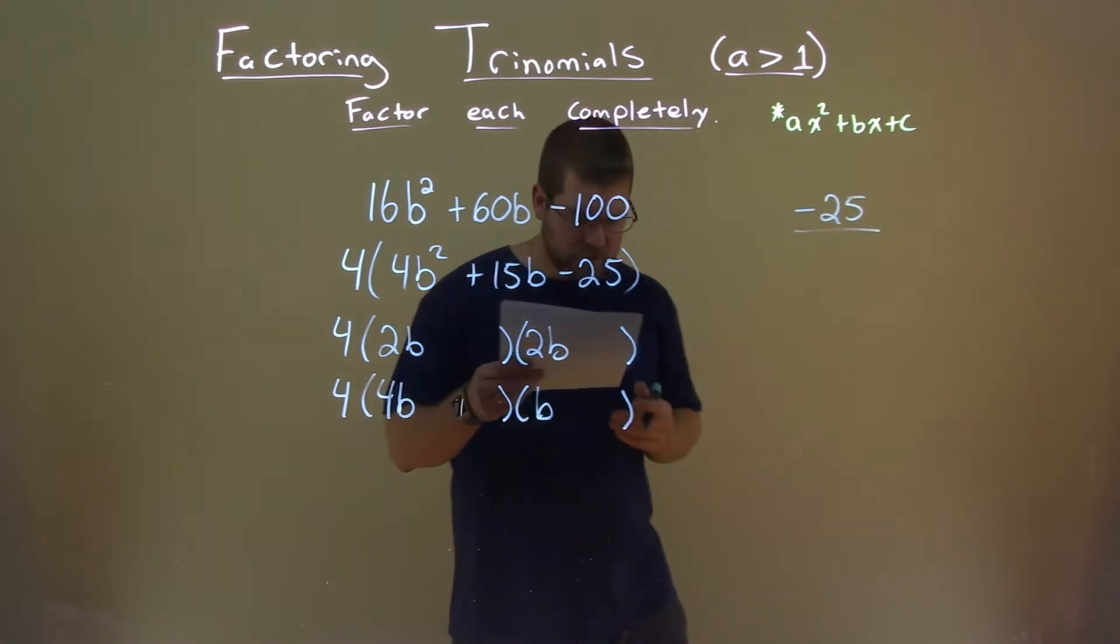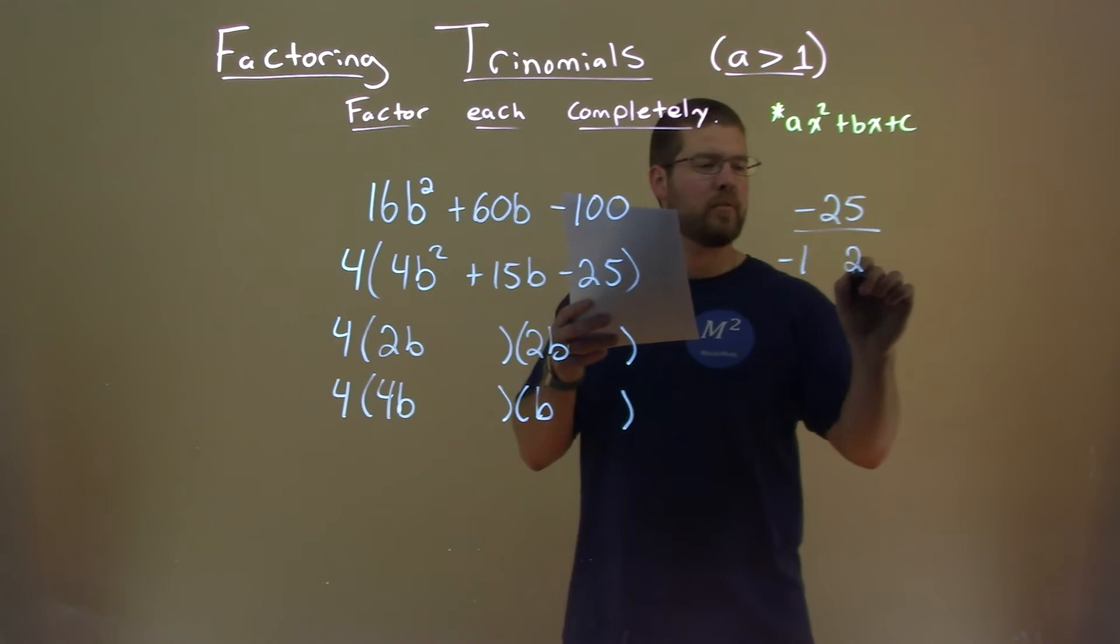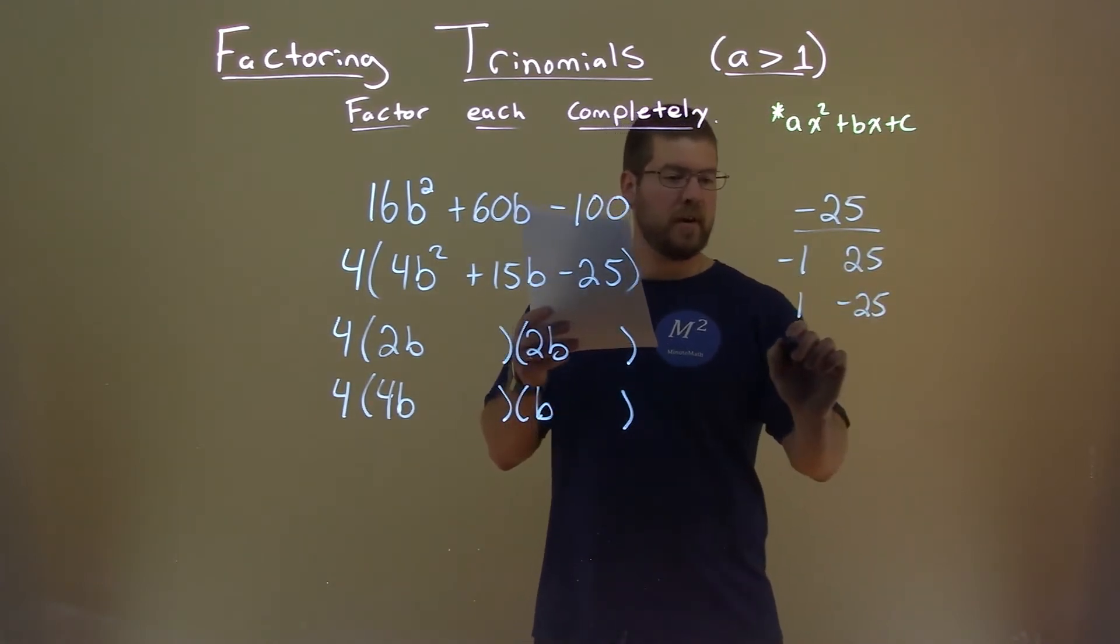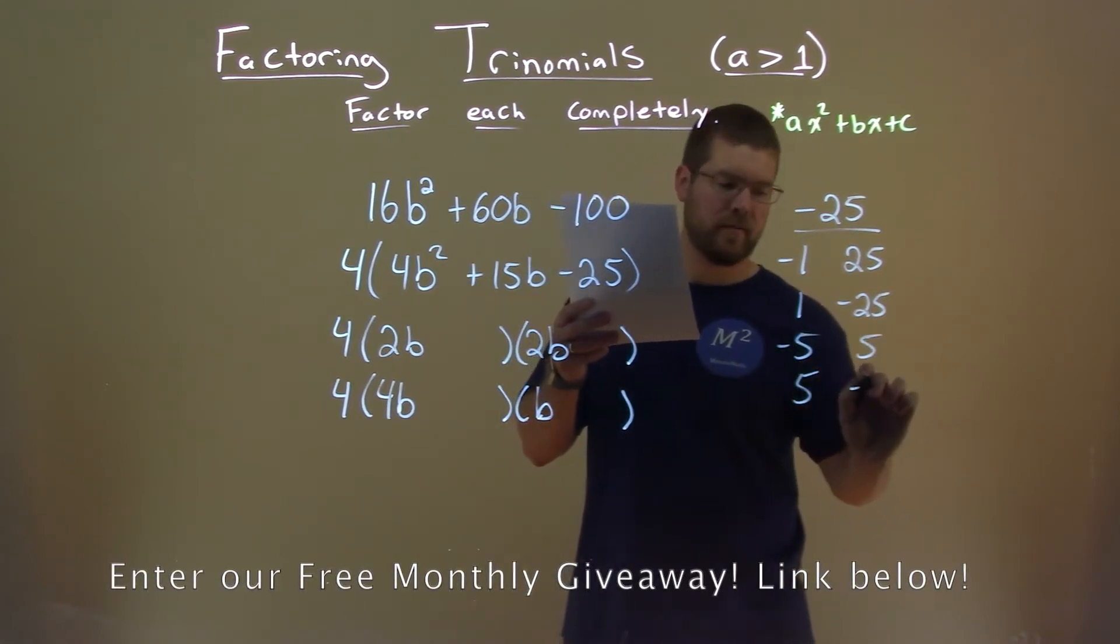Negative 25. What two numbers multiply to be a negative 25? A negative 1 and a positive 25, or a 1 and a negative 25. We also can have a negative 5 and a positive 5, or a 5 and a negative 5.